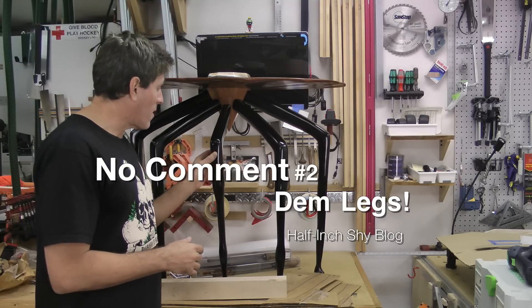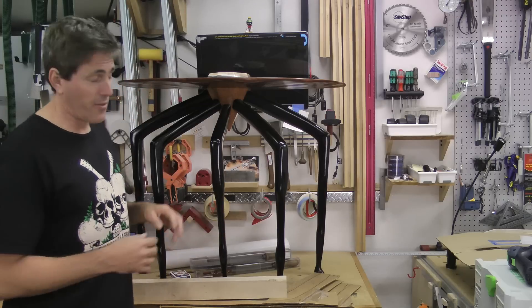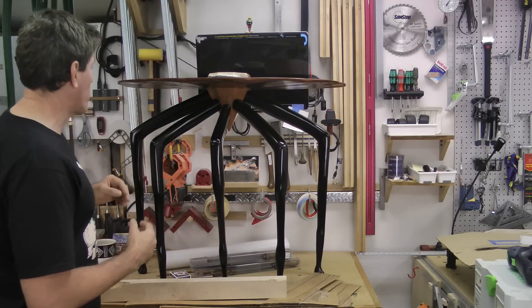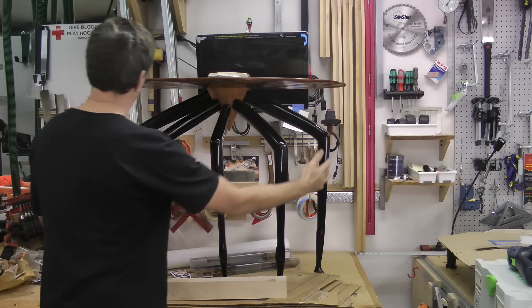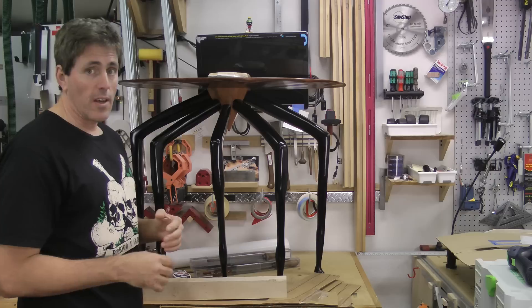Now today we're going to talk about the legs. Obviously this is a very leggy table. It's got five legs going off of it and this leg here mirrors this other one on this side. This one mirrors this leg here in the center is unique.